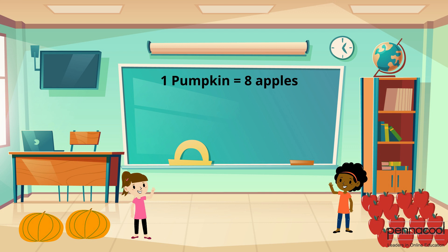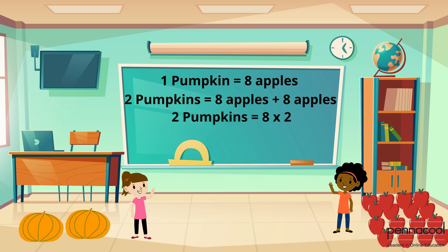Kayla thinks briefly and realizes that two pumpkins would have a mass of eight apples plus eight apples, or the equivalent of eight multiplied by two, which gives a total of 16 apples.